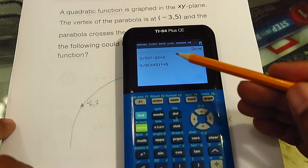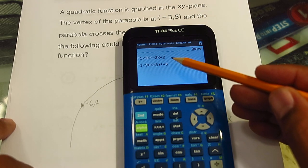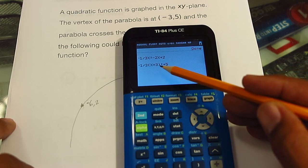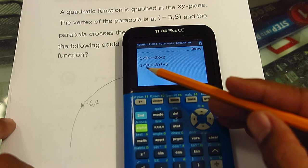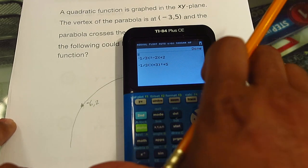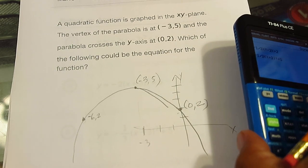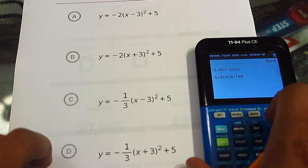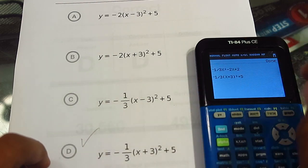What it gives me is the original in standard form and then it gives me in vertex form. You can see that the vertex is at negative 3, 5 and it has a negative 1 third for the leading coefficient. All we'd have to do is find that one here and that would be choice D. That would be our answer.